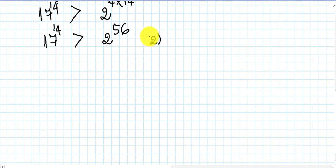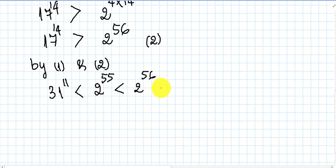So let us write the equation. By equation one and equation two, we get 31 power 11 is smaller than 2 power 55 and smaller than 2 power 56 and smaller than 17 power 14. So 31 power 11 is smaller than 17 power 14.